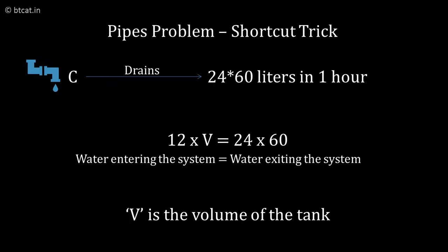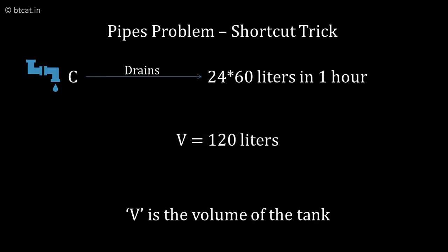In other words, we can now write 12 into V, where V is the volume, 12 into V is equal to 24 into 60. Whatever the number of liters coming into the system should be going out from the system because finally the tank is empty. Solving for V, we get 24 into 60 divided by 12 and the answer is 120 liters.